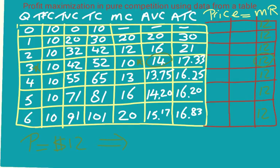At a price of $12, because price is less than average variable cost, we produce at a quantity of zero — we shut down. Our total fixed cost is $10, so our loss equals $10. In the long run, we hope the price increases or costs decrease so we can start producing again.